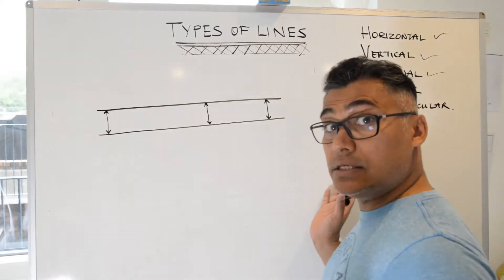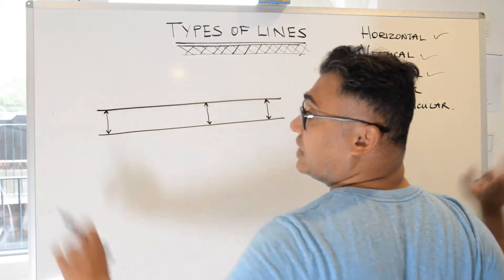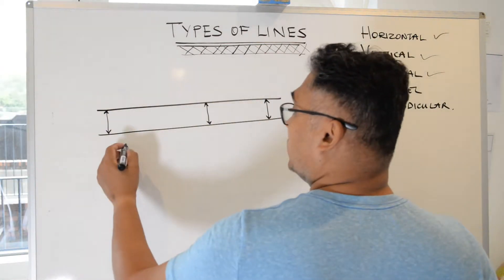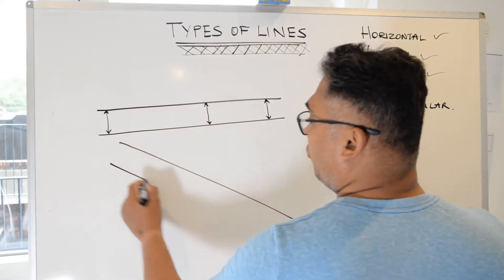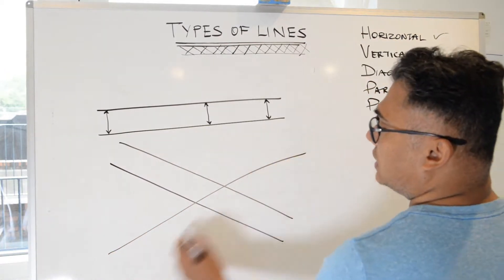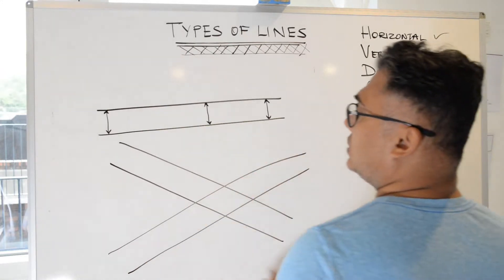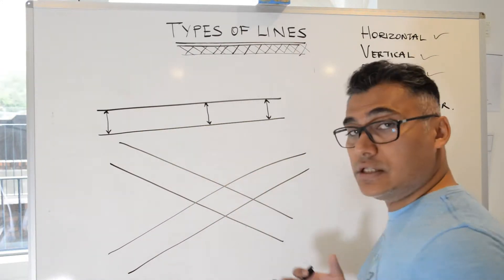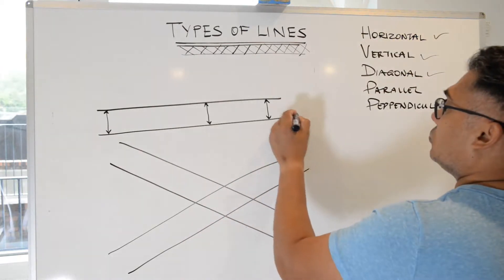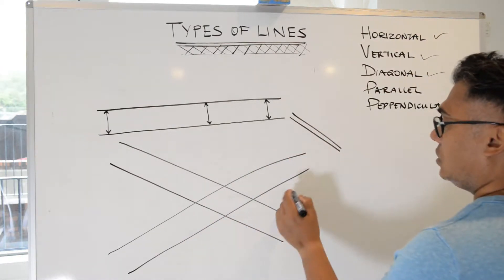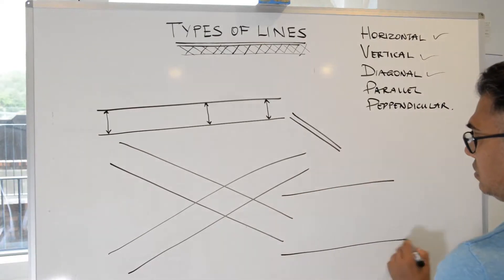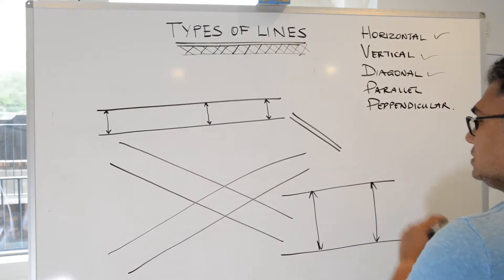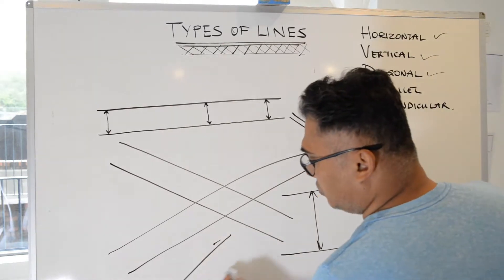They never meet — they never touch. If you were to carry on these two lines to infinity, they will never meet. Those are parallel lines. It doesn't matter what gradient the line has, as long as they follow each other, stay apart, and are equidistant. We can draw parallel lines that are close together or far apart — maintaining the same distance, regardless of gradient.